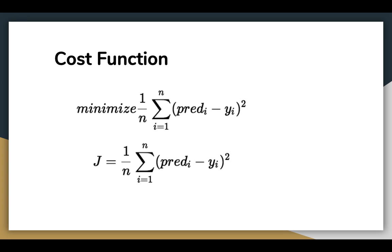Mathematically, we find the mean distance between all the points and we want to minimize that distance so that the line fits the data perfectly. To minimize the cost function, we use a technique called gradient descent.